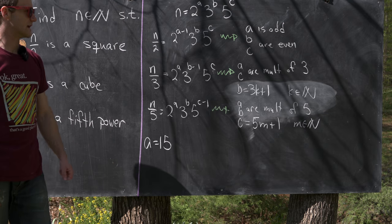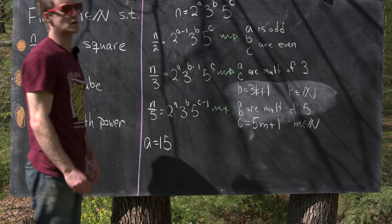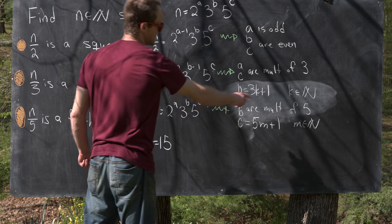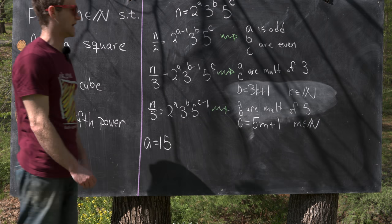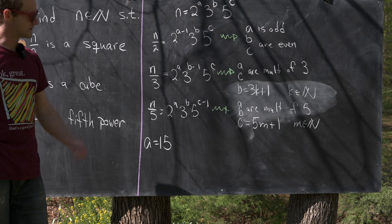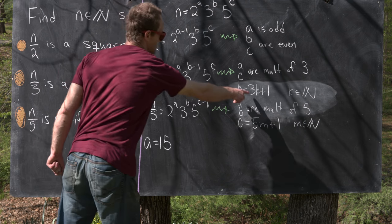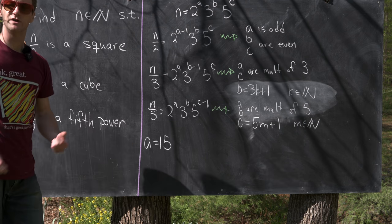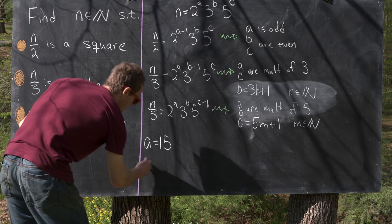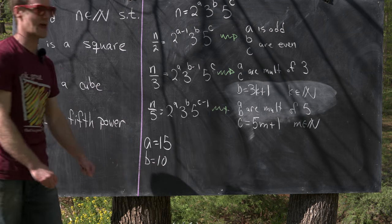Now we can play this game again. We need b to be even — in other words, a multiple of two — and b also has to be a multiple of five. So b has to be a multiple of ten, and it has to be one more than a multiple of three. Notice that ten is already one more than a multiple of three. So we've got b equals ten.